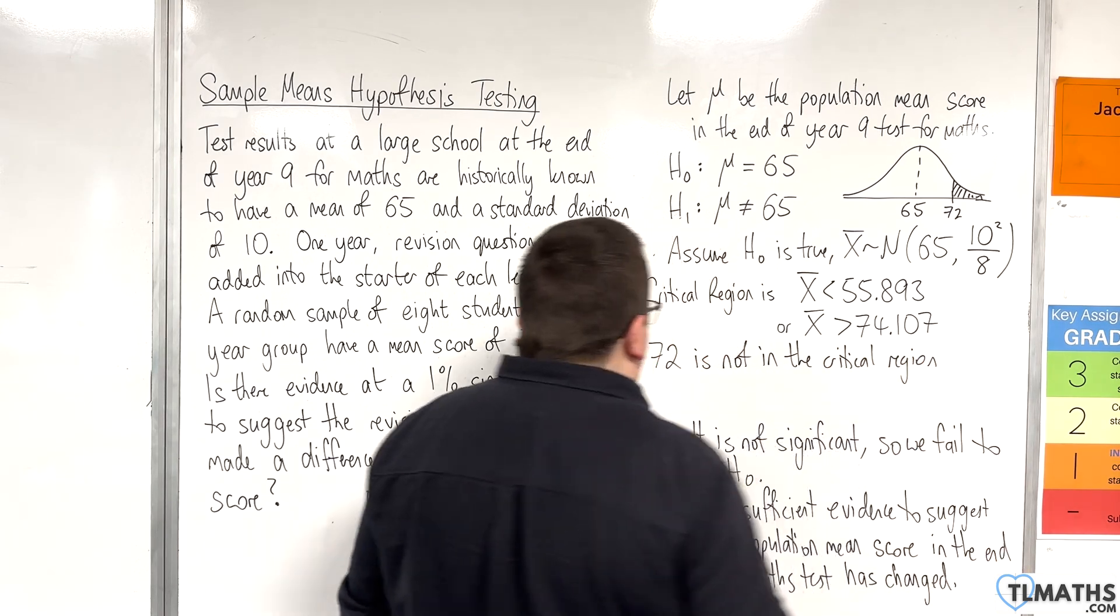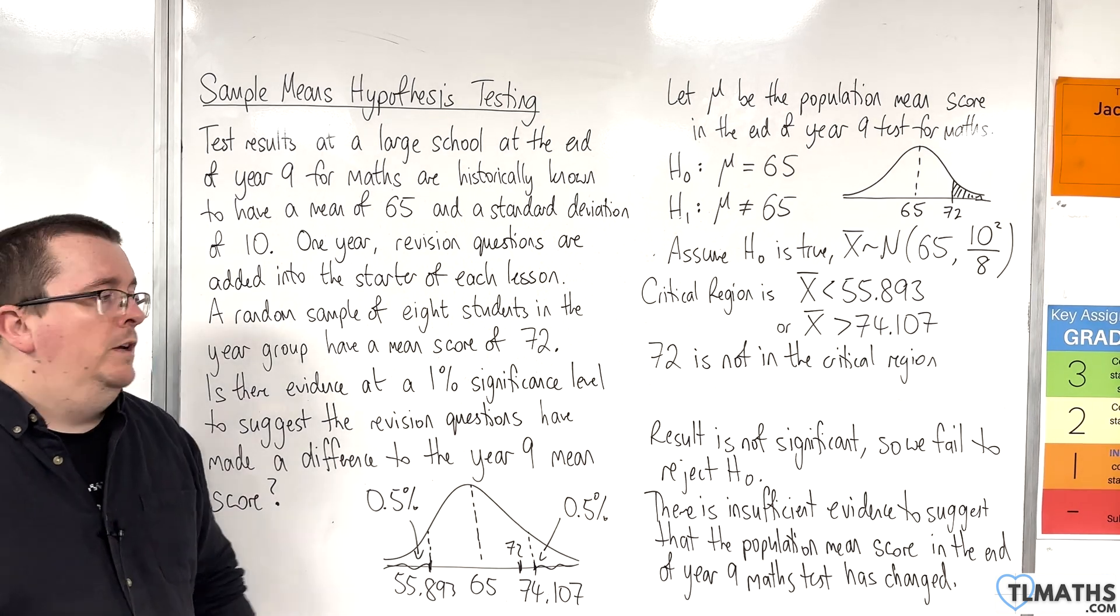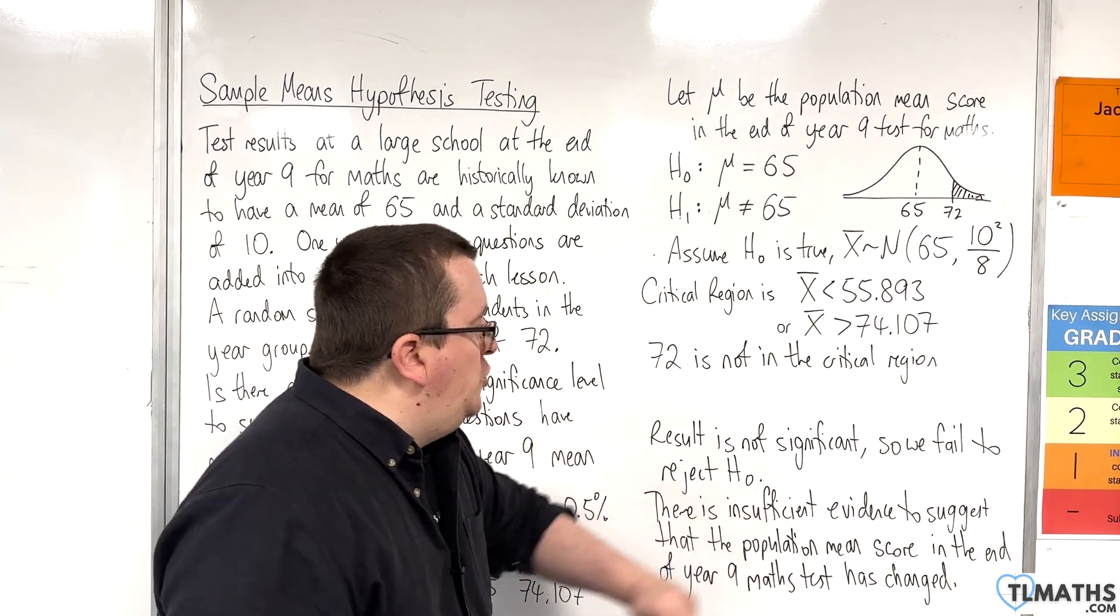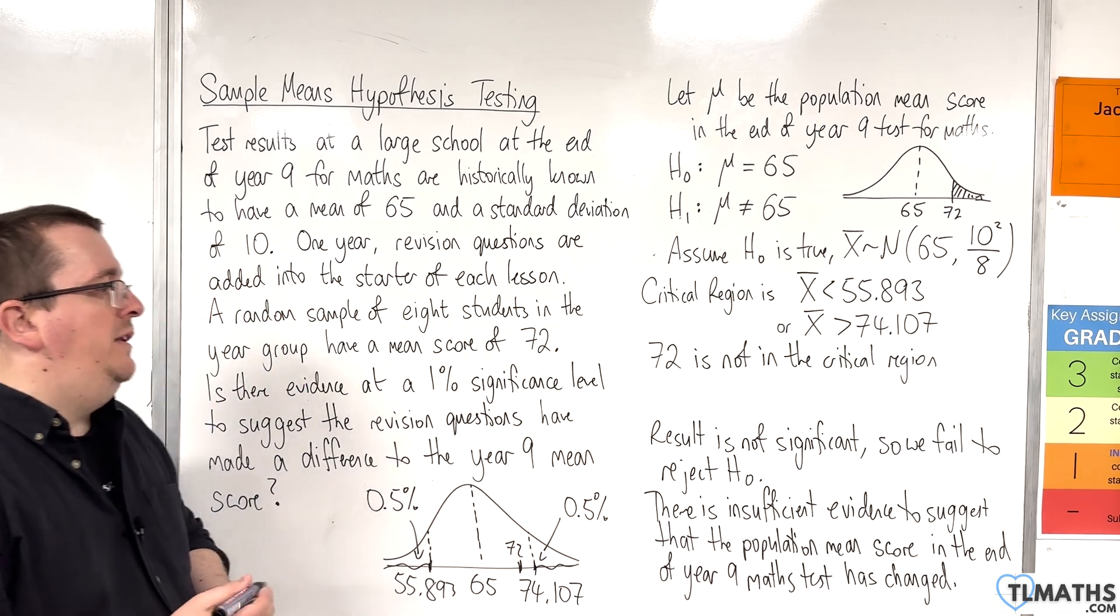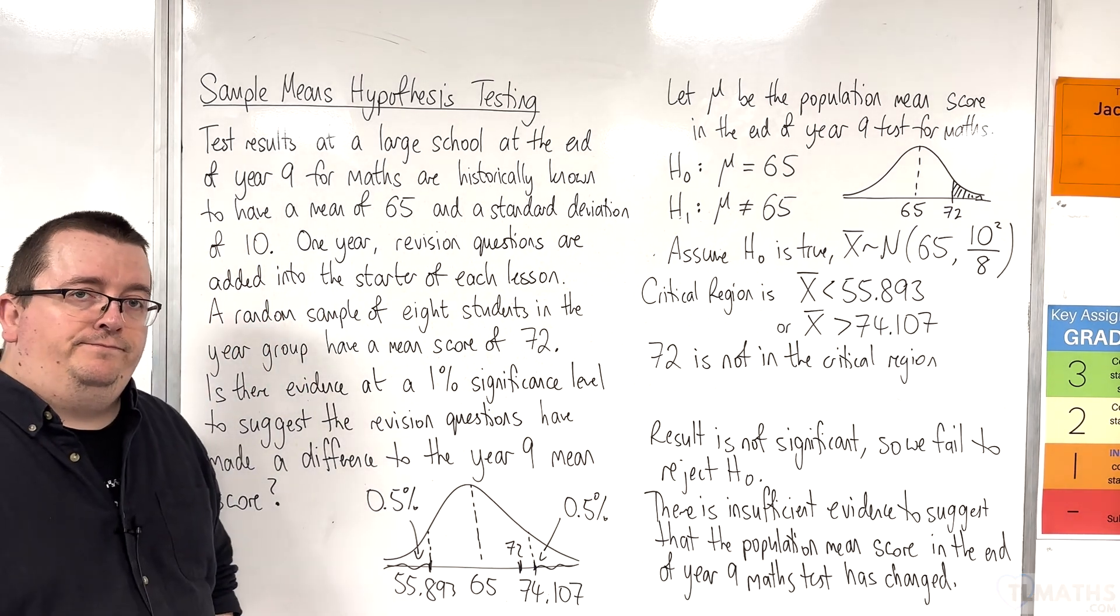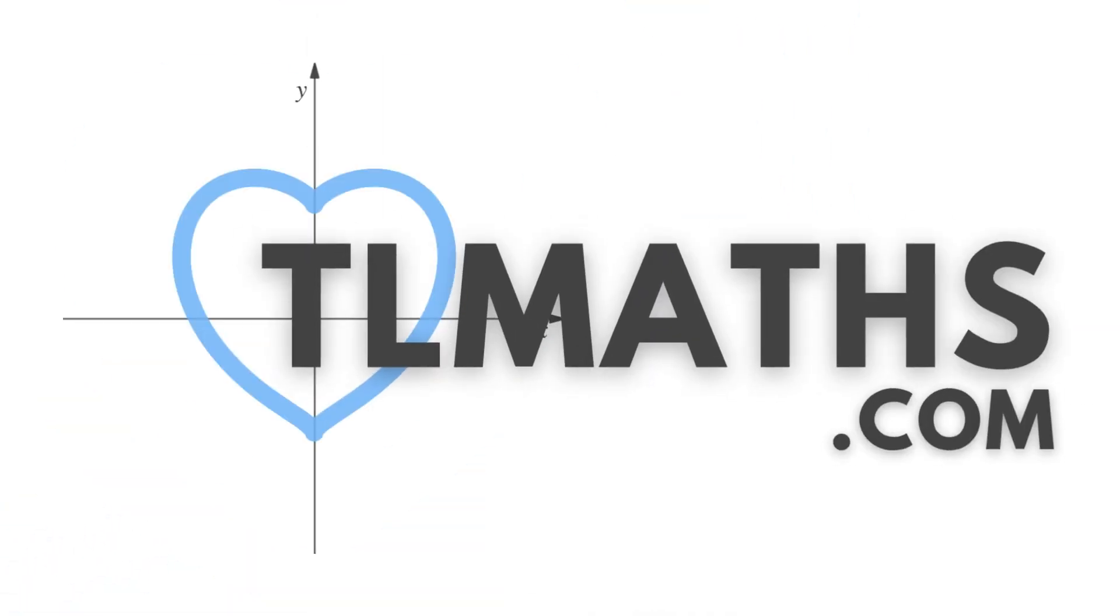So, the conclusion is, the result's not significant. So, we fail to reject H0. There is insufficient evidence to suggest that the population mean score in the end of year 9 maths test has changed. So, let's go. Thank you.